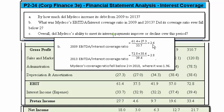For 2013, we do the same calculation: 72.8 plus 38.6 of depreciation and amortization, divided by 39.4 interest expense, which comes out to 2.8. As for whether it ever fell below 2.0 — yes, it did: in 2010 it was 1.96, calculated the same way.